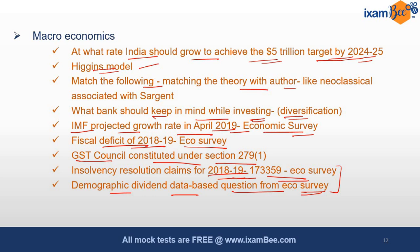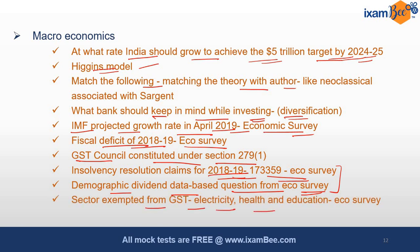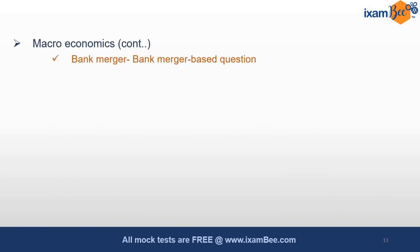The economic survey presents a very good picture of the Indian economy with lots of data, both qualitative and quantitative analysis. Sectors exempted from GST — like electricity, health, and education — also came from the economic survey. On microeconomics, bank mergers were very much in discussion last time, and nowadays privatization of banks, recapitalization of banks, and privatization of public sector enterprises and disinvestment are coming into discussion.